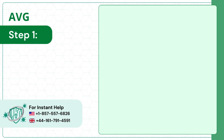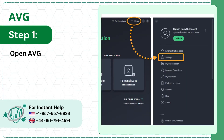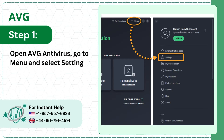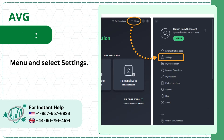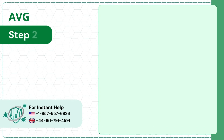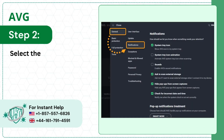Step 1: open AVG antivirus, go to menu, and select Settings. Step 2: select the General tab, then select Notifications.